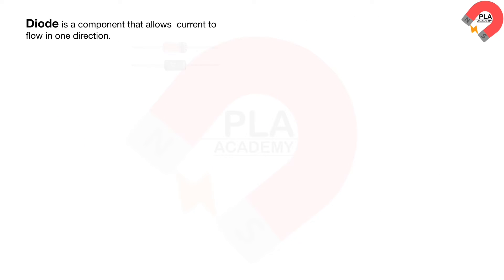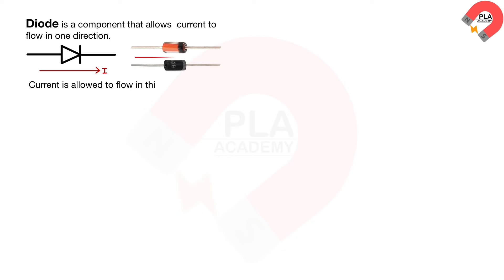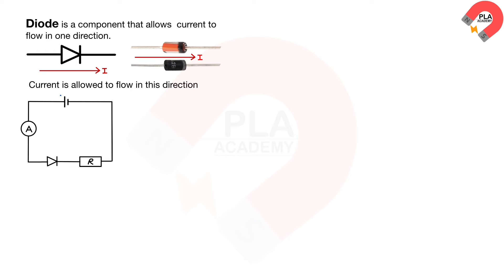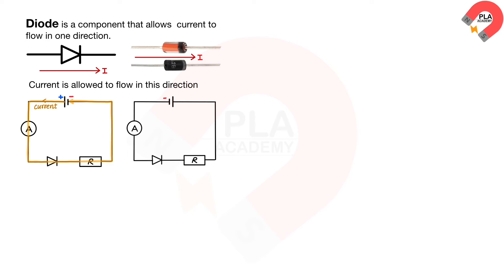A diode is a component that allows current to flow in one direction. This is the symbol of a diode. For the first circuit diagram, the current flows from the positive to negative terminal, and the diode allows the current to pass through. For the second circuit diagram, the battery is reversed, causing the current from the positive terminal to be blocked by the diode.